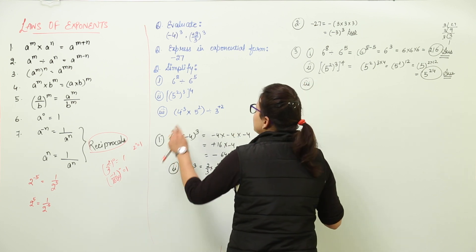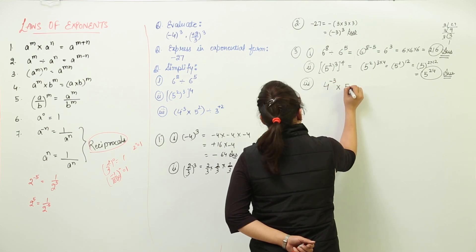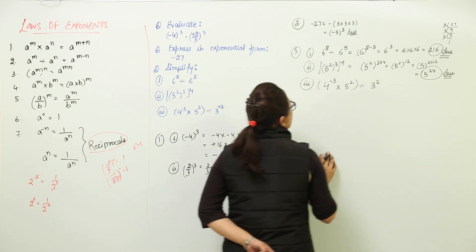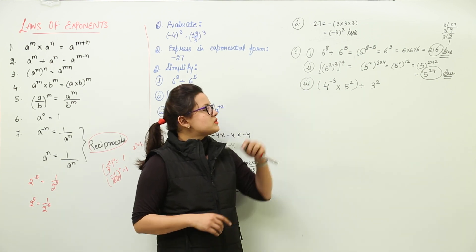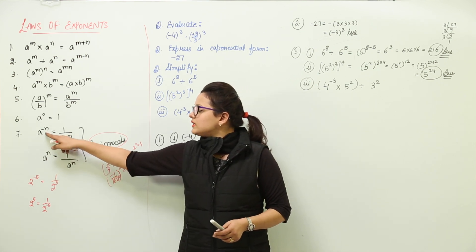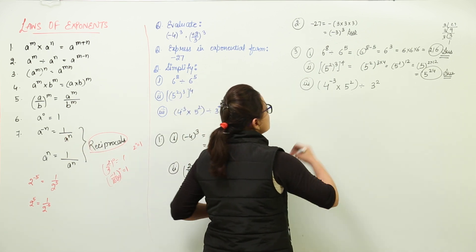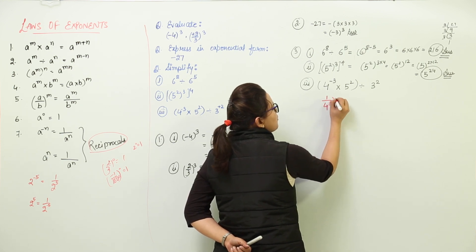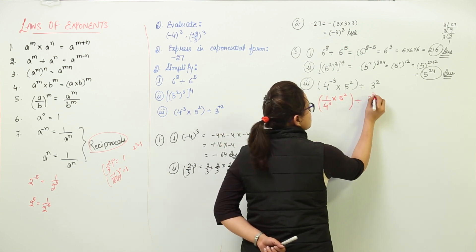The last part is 4 raised to power minus 3 multiplied with 5 raised to power 2, whole divided by 3 raised to power 2. Here we have to convert the negative powers into positive ones. Based on the 7th law, a negative power can be converted into a positive power by writing the reciprocal. So we write 1 upon 4 raised to power 3, multiplied with 5 raised to power 2, and this whole is divided by 3 raised to power 2.